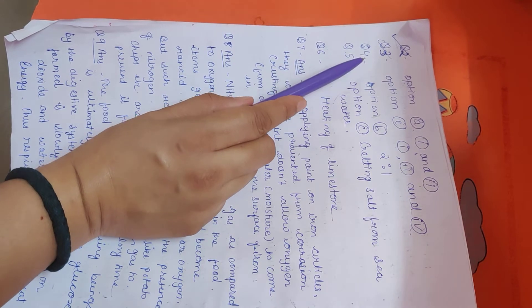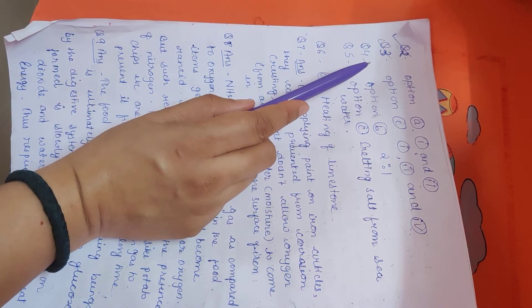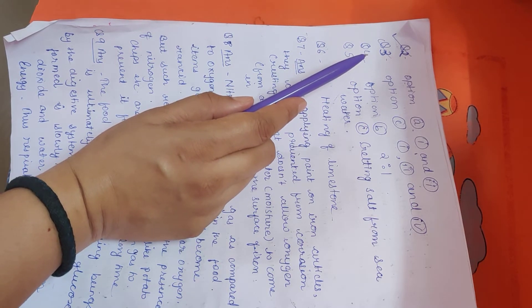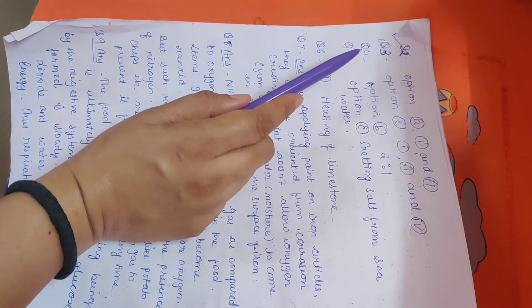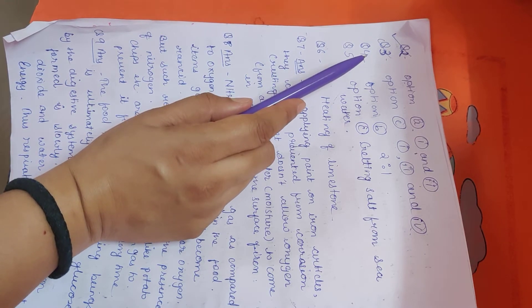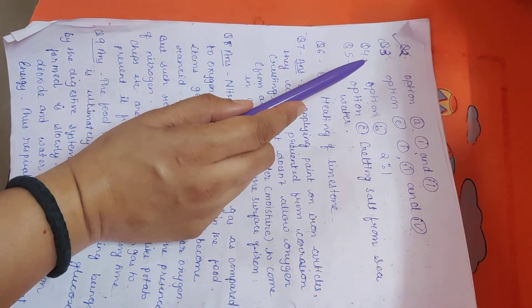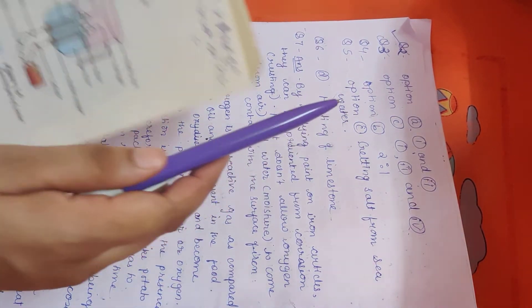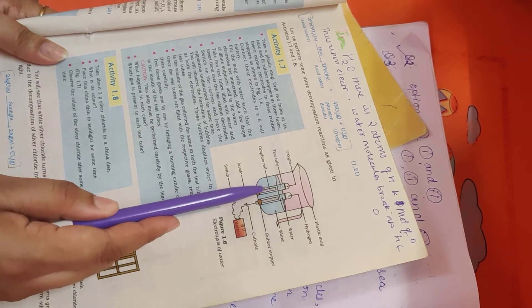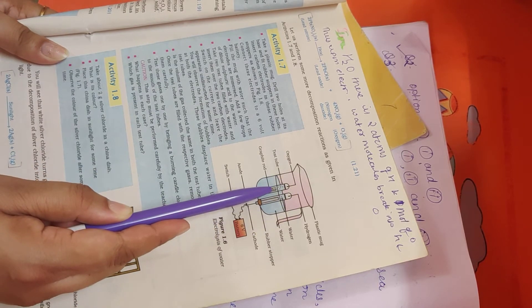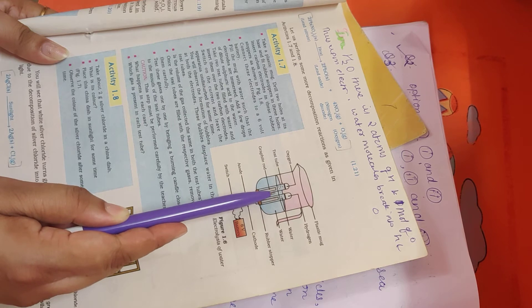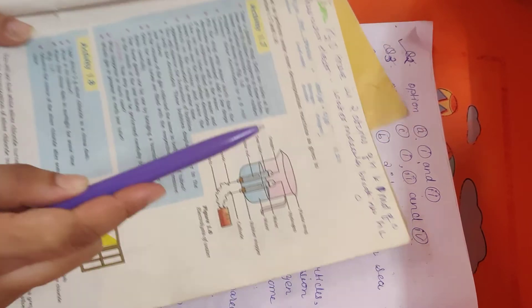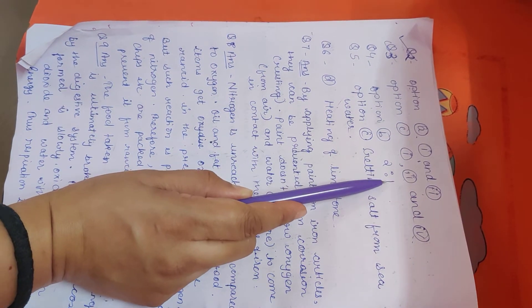Next question was, electrolysis of water is a decomposition reaction. The mole ratio of hydrogen and oxygen gas liberated during electrolysis of water is... So during electrolysis of water, I told you, the water molecules consist of two atoms of hydrogen and one molecule of oxygen. So the ratio will be 2 is to 1.